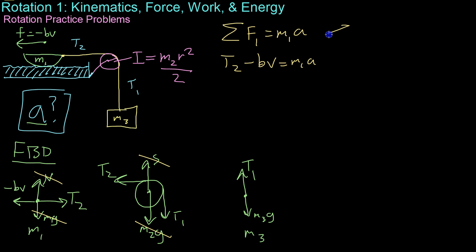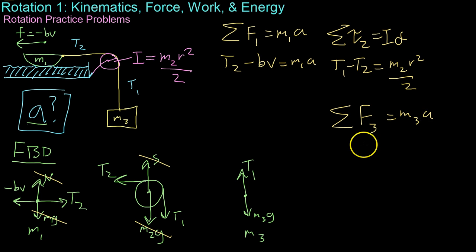Next, we will sum the torques on object number 2, which we know equals I times alpha. And we know that it's T1 minus T2 equals M2 R squared over 2. And lastly, we're going to sum the forces on object 3, which equals its acceleration. And that's simply M3 G minus T1 equals M3 times a.